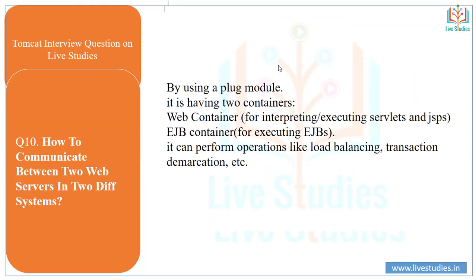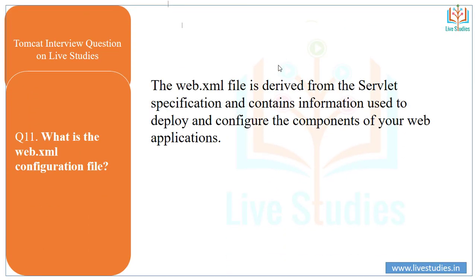Another question: how do two web servers in two different systems communicate? By using a plugin module. There are two containers: a web container for interpreting and executing servlets and JSP files, and an EJB container for executing EJBs. It can perform operations like load balancing and transaction demarcation.